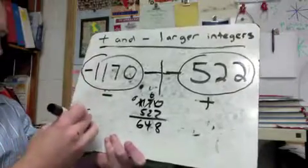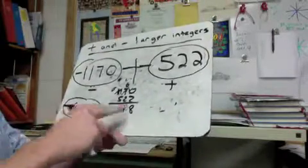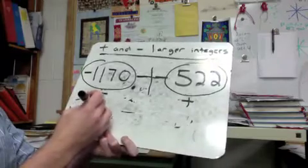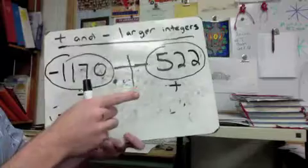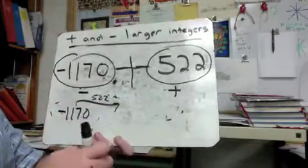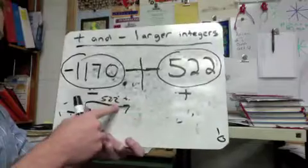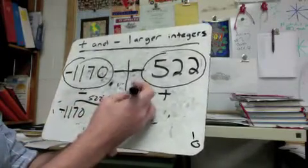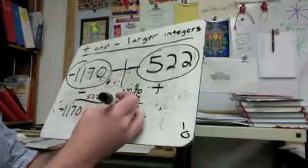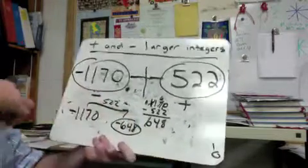Using the number line method: I start at negative 1170 and I'm going 522 in the positive direction. Going 522 this way does not get us to zero — zero is all the way over here, and I would need to go 1170 to reach zero. So this is again just our subtraction problem: 1170 minus 522 gives me 648, and since we have more negatives, the answer is negative 648.